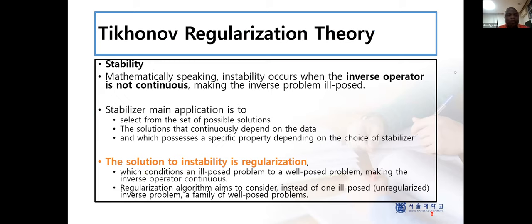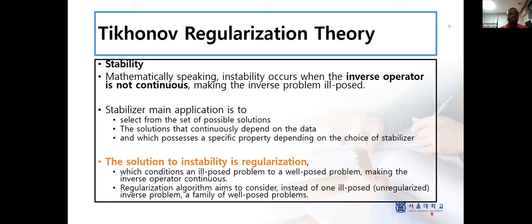What about stability? We have typical regularization theory. When an inversion problem is not stable, mathematically speaking, the inverse operator is not continuous, and that gives us ill-posed problems. We need a stabilizer to make the inversion stable. The stabilizer application helps us to select from the set of possible solutions — solutions that continuously depend on the data and which possess a specific property depending on the choice of stabilizer. The solution to instability is regularization, which conditions the ill-posed problem to a well-posed problem.